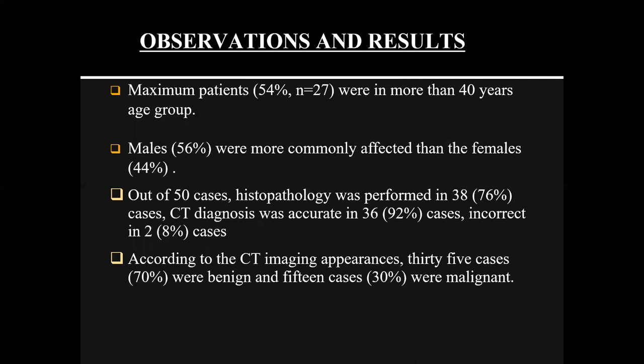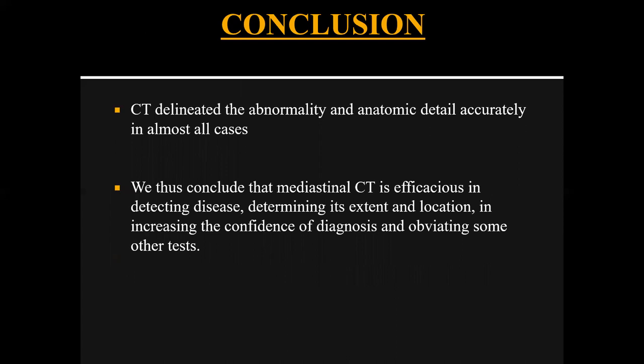From all observations, 54% of patients were in the more than 40 years age group, and males were more commonly affected at 56%. Out of 50 cases, histopathology was performed in 38 cases, of which 36 were diagnosed correctly on CT — giving CT an accuracy of 92%, with 8% incorrect cases. According to CT imaging appearance, 35 cases were benign and 15 were malignant — 70% benign and 30% malignant. In conclusion, CT delineated the abnormality and anatomic detail accurately in almost all cases, and mediastinal CT is efficacious in detecting disease, determining its extent and location, and increasing diagnostic confidence while obviating some other tests.